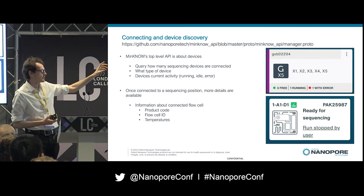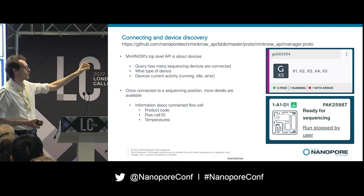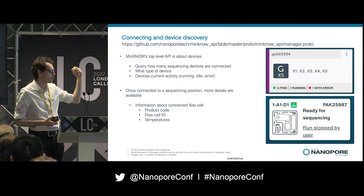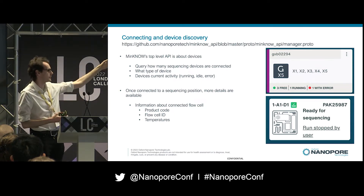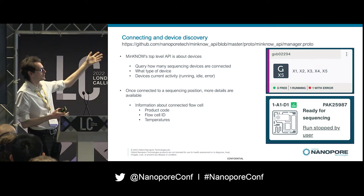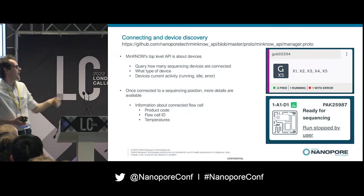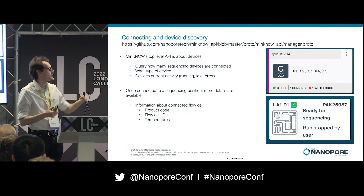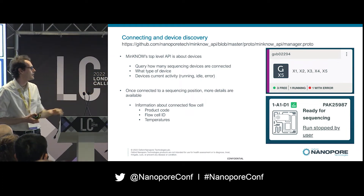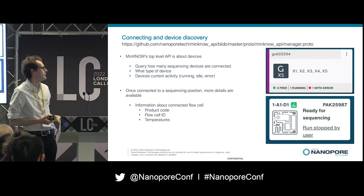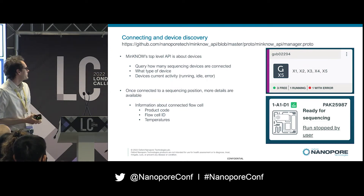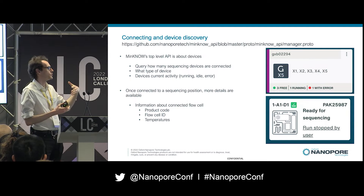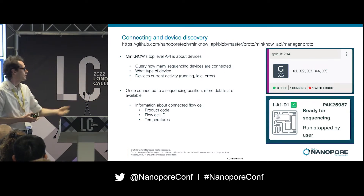In newer Minnow — I think this is going out in 5.1 — you can get some top-level information about what is going on with those positions. You can see, for example, one has stopped with some kind of out-of-range temperature error, and three are running sequencing right now. So this API lets you query what positions you've got available to you.